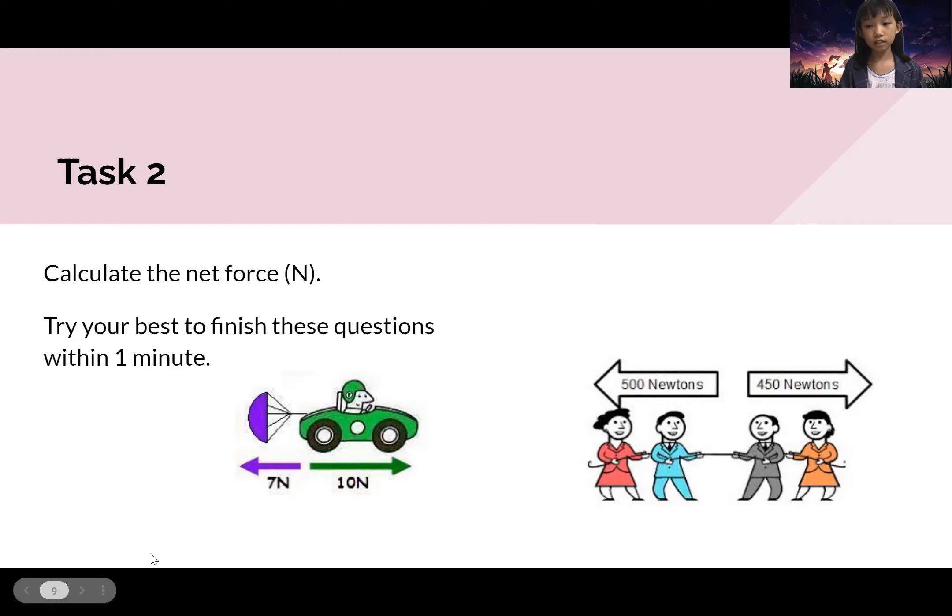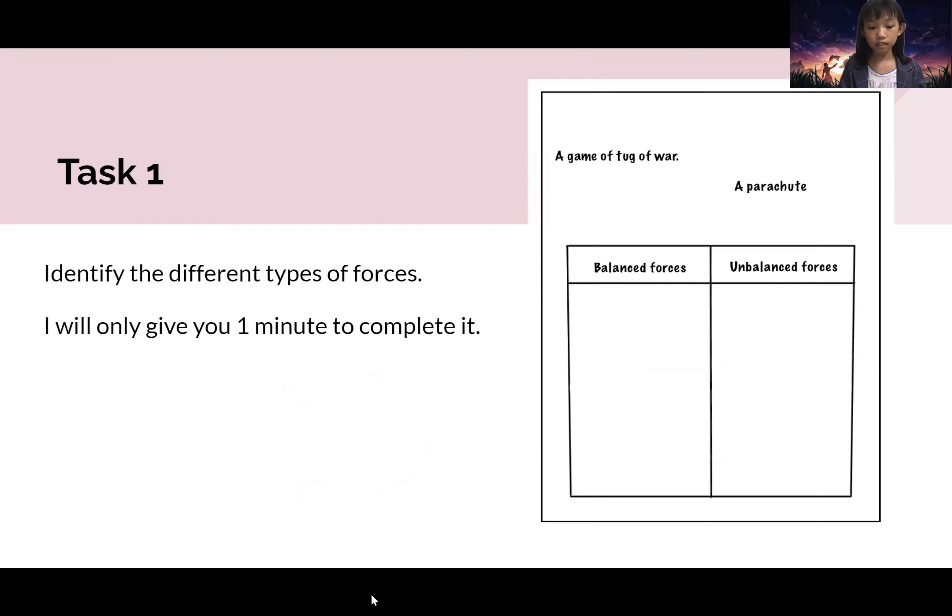Okay, so now let's discuss the answers for task one. The answer for task one for balanced forces is a parachute, because there is gravity and air resistance. And lastly, unbalanced forces is a game of tug of war, as they are unequal or they may be unequal forces going against each other.